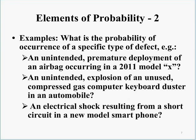Here are some examples from cases I've worked on through TASA attorneys. What is the probability of occurrence of a specific type of defect — for example, an unintended premature deployment of an airbag in a 2011 Model X? An unintended explosion of an unused compressed gas computer keyboard duster in an automobile? An electrical shock resulting from a short-circuit in a new model smartphone? Those are all probabilities — 10%, 20%, 50%, 0.005%, whatever it might be.